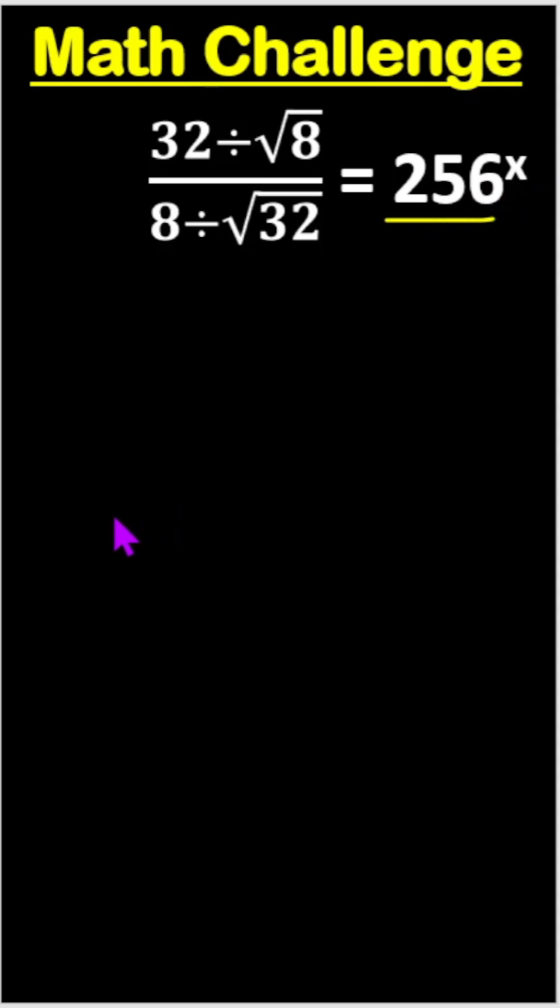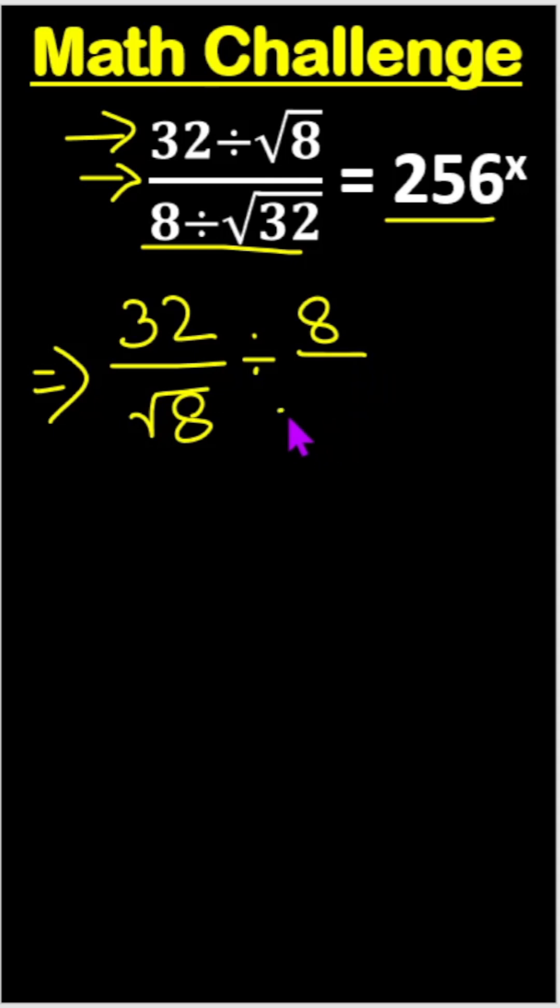We did similar math, little difference. So this one we can write 32 divide root 8 against this one. And here is division sign. So here is divide, here is 8 divide root 32 equals to 256 to the power x.